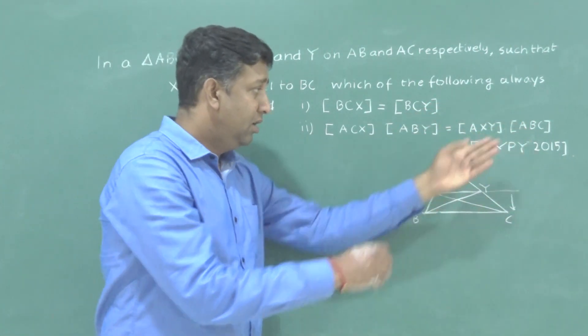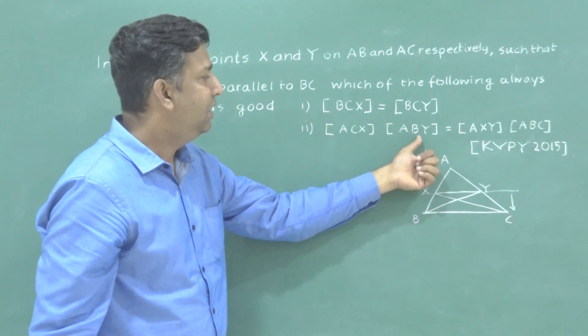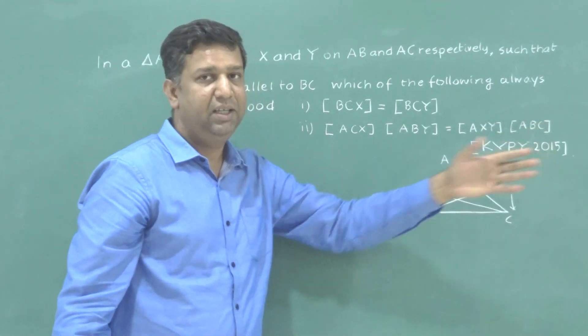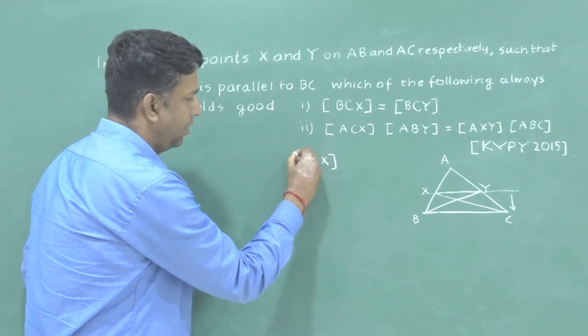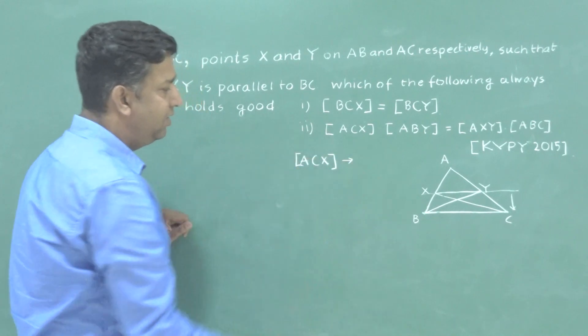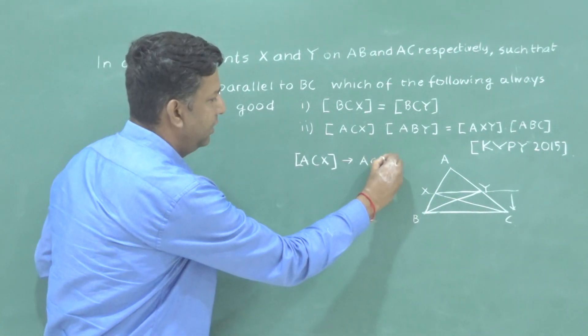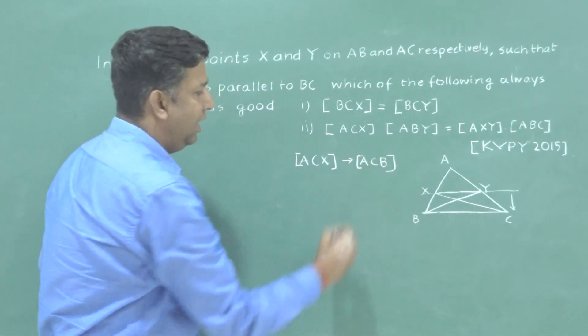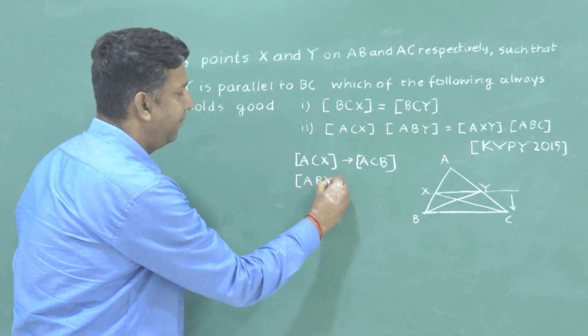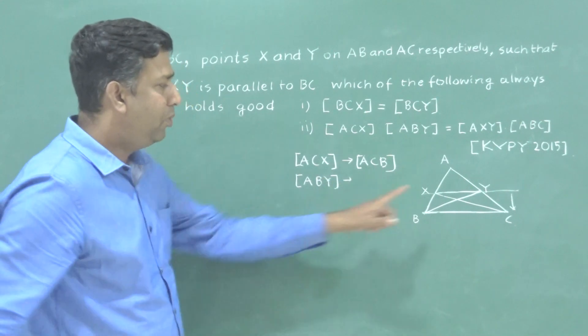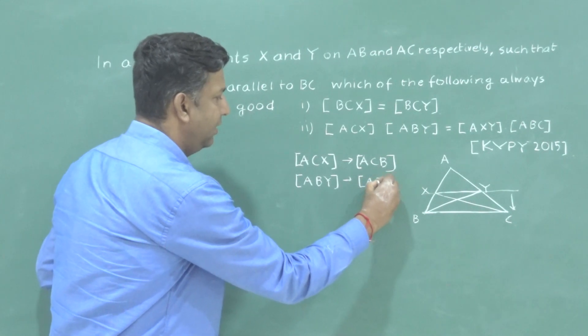And obviously, on the right, here it's given ABC. So you know, ABC into ABC will be equal to ABC into ABC. I am going to write and tell ACX will become ABC as X merges with B. Similarly, ABY, the Y point will become what? Again, it will become ABC.